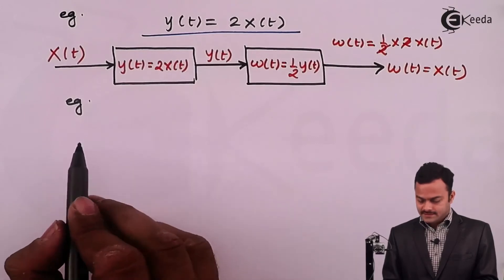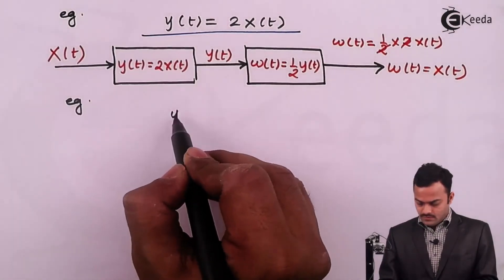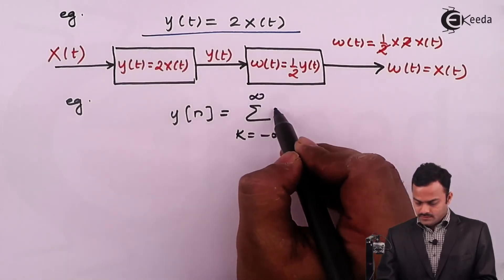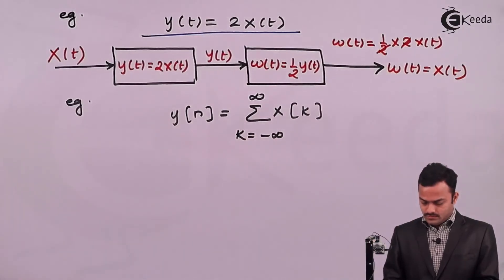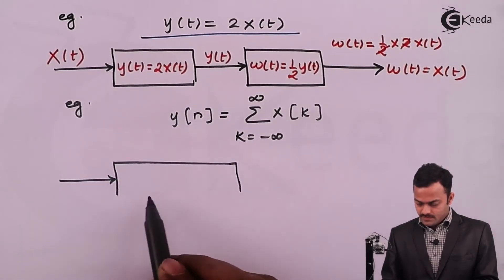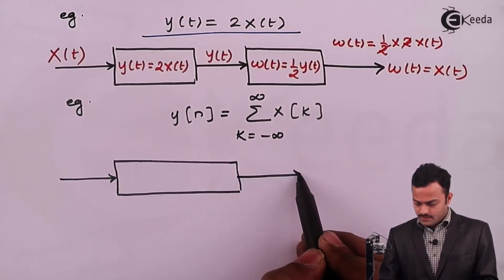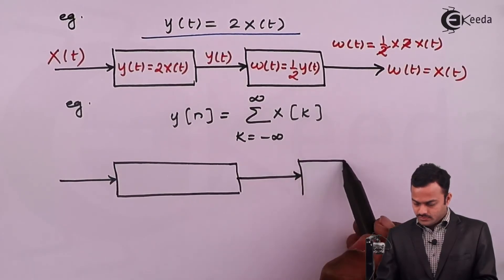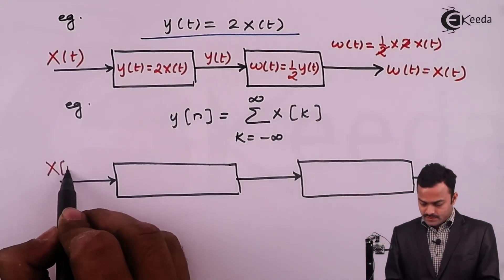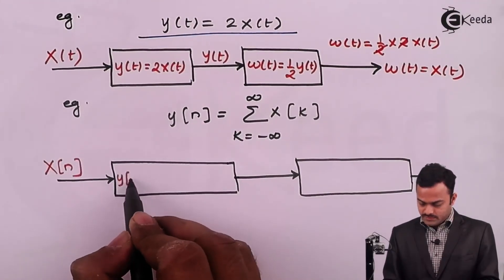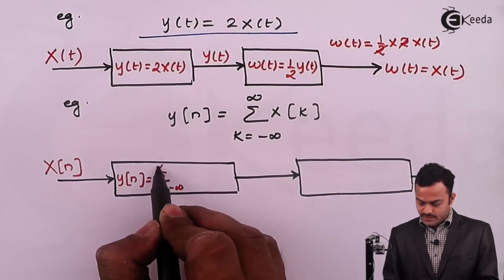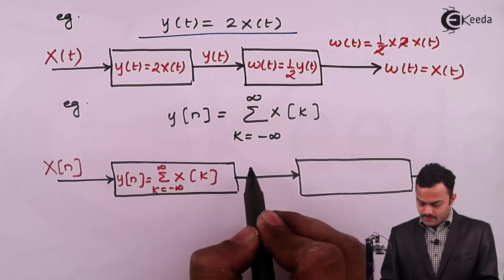Let's take one more example in discrete time domain. So suppose the system is like this: y of n is summation k from minus infinity to infinity x of k. So logic is this: x of n is passed through the system which will give you y of n, and that needs to be passed through one more system in order to reproduce the original signal x of n. I repeat: x of n is the signal passed through this system. The job of the system is to get this value, summation ranging from minus infinity to infinity x of k. So this will give you y of n.